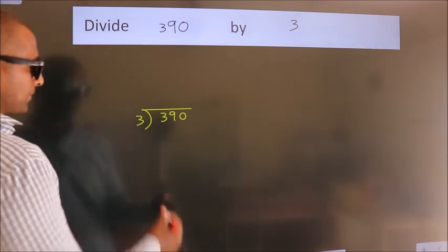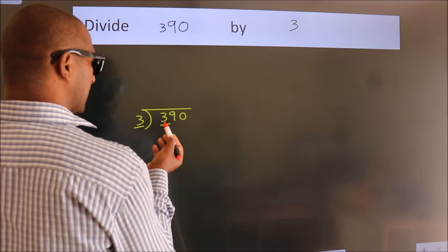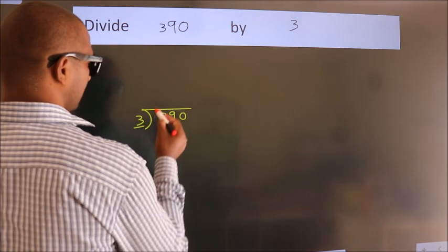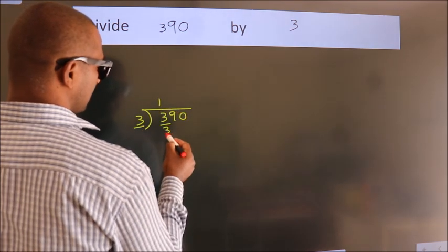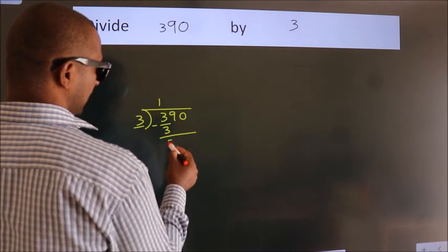Next, here we have 3, here 3. When do we get 3? In 3 table, 3 times 1 is 3. Now we should subtract, we get 0.